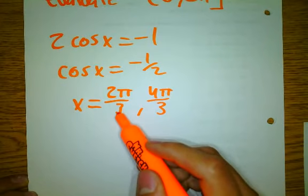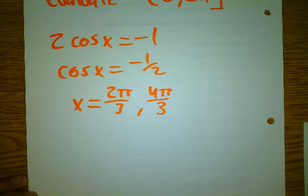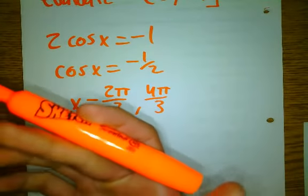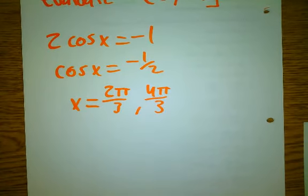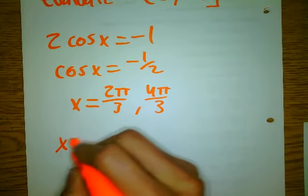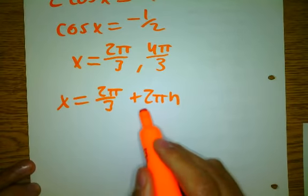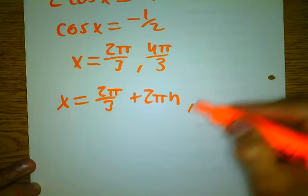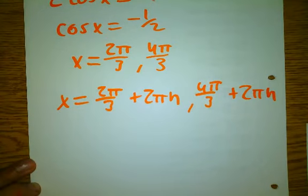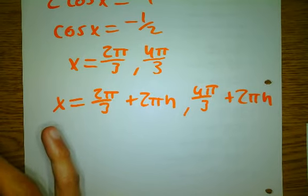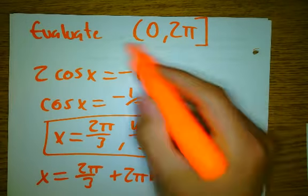Where on the unit circle do you have a cosine of negative 1/2? At 2π/3 and 4π/3. You should never miss this question because you can check your work every single time. You need to know your unit circle for this — there's no way around it. If you know your unit circle, you can always check your work. The answer without restrictions would include plus 2πn.